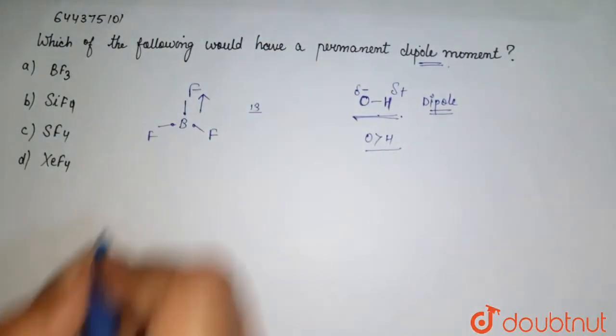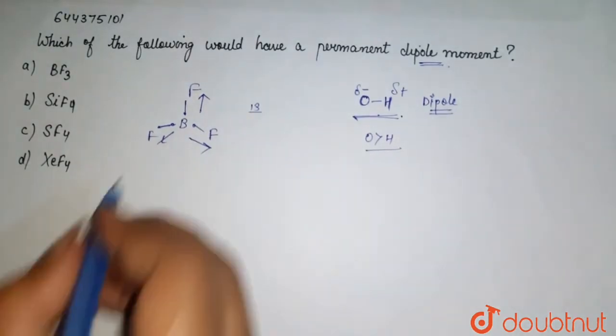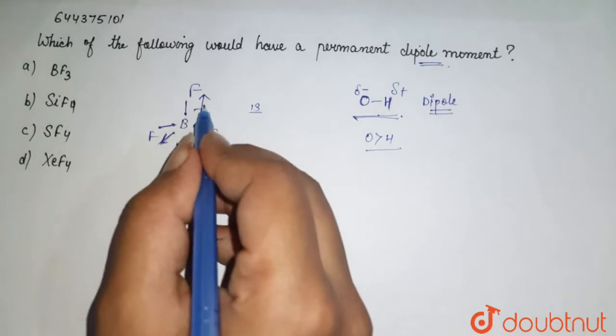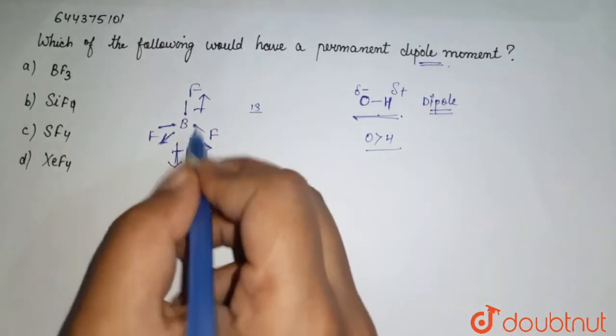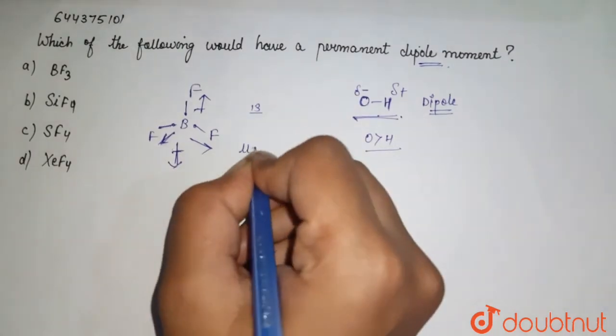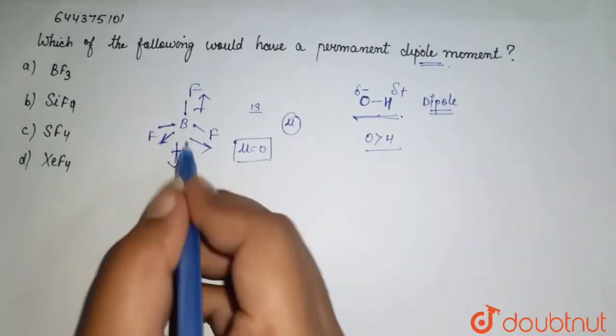These fluorines draw electron density to this side and this side. The resultant of these two comes in this side, and this vector and this vector cancel each other. The dipole cancels, so the dipole comes out to be zero. Your dipole moment is denoted by mu, and here it cancels to be zero.